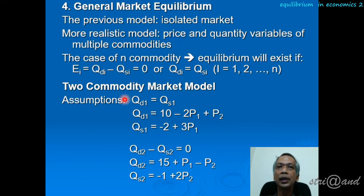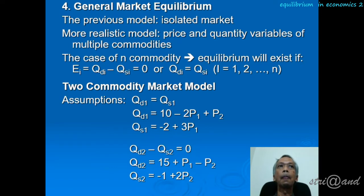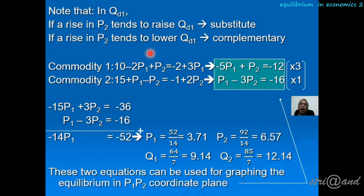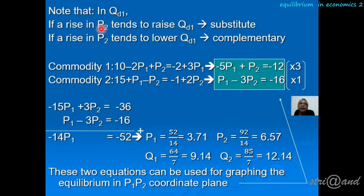This is an example of a two-commodity market model. The relationship we saw in the previous example was substitution. Another possible relationship is complementarity. For example, consider CDs and CD players. When the price of CDs increases, people want fewer CDs, which also means they want fewer CD players. So when the price of CDs increases, the quantity demanded for CD players decreases — this is a complementary relationship.